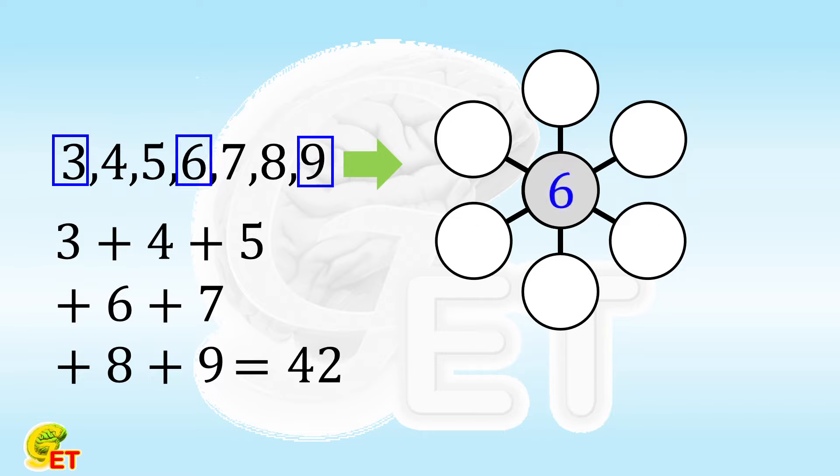If the number in the middle is 6, 42 minus 6 equals 36. 36 divided into 3 parts gives each part as 12. So the opposite of 4 is 8, the opposite of 5 is 7, and the opposite of 3 is 9.